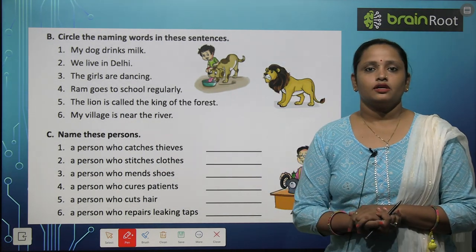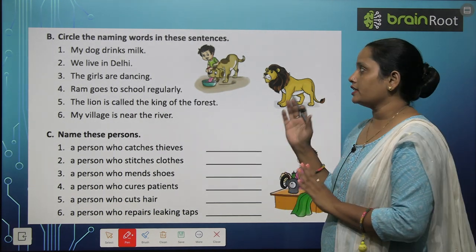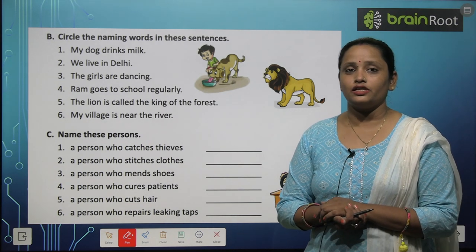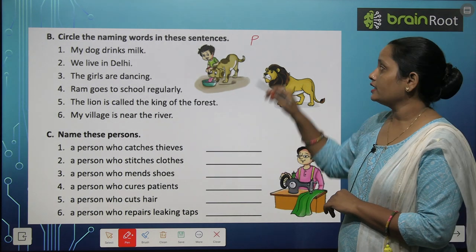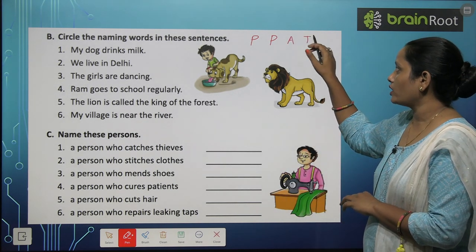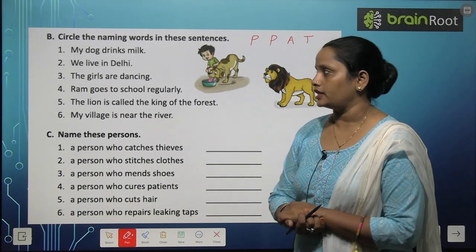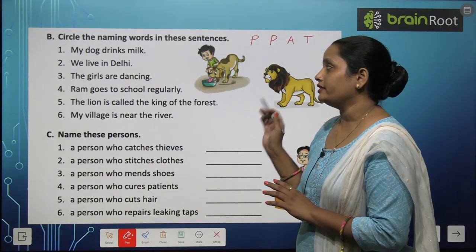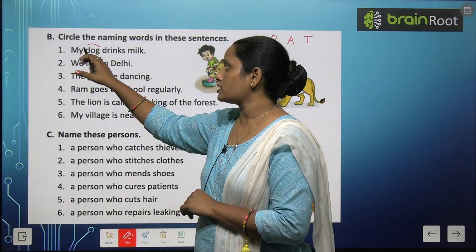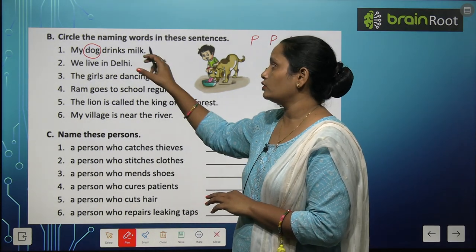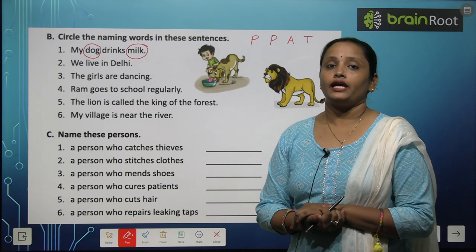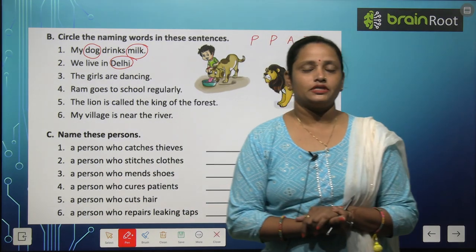Now let's move on to Exercise B. Circle the naming words in these sentences. Naming words kissi person ko kehte hain, kissi place ko, kissi animal ko, aur kissi thing ko. First: my dog drinks milk. Dog — woh ek animal hai, circle kar denge. Milk — it's a thing, usse bhi circle kar diya. Next: we live in Delhi. Delhi ek jaga ka naam hai, isse circle kiya hai.